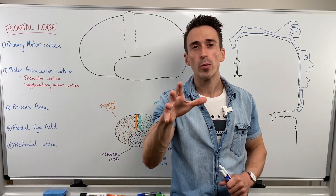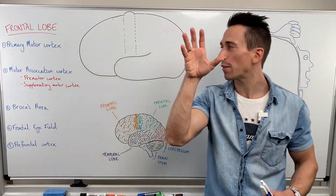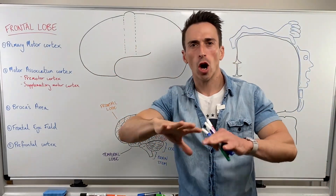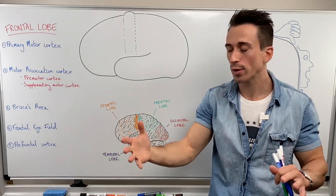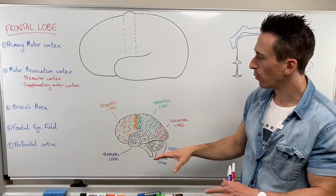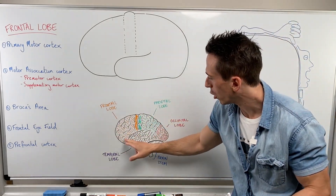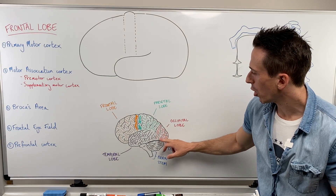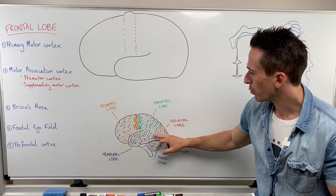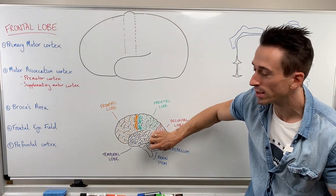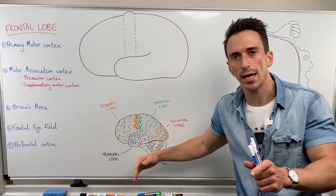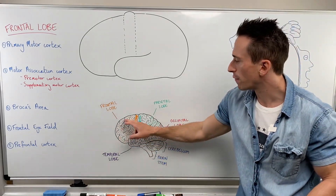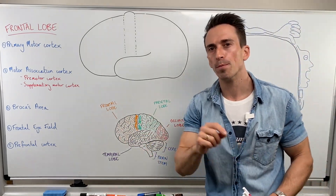Hi everyone, Dr. Mike here. In this video we're going to take a look at the frontal lobe. To orientate ourselves, let's look at the other lobes of the brain. We've got the frontal lobe, the parietal lobe, the occipital lobe, and the temporal lobe. And if you were to pull that away, you would see the insular underneath. We're focusing in this mini lecture on the frontal lobe.